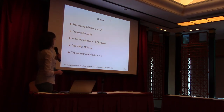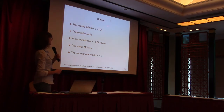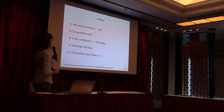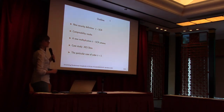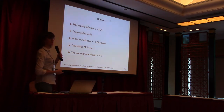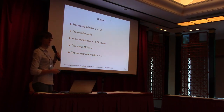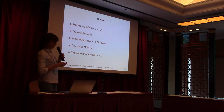In this talk, we start with a new security definition, which will be T-SCR — T-SNI with common randomness. I will give you some compositional results about this property, and I will show you a new multiplication scheme which satisfies this property. Then we will see a case study on the AES S-box, and the particular case for order one.